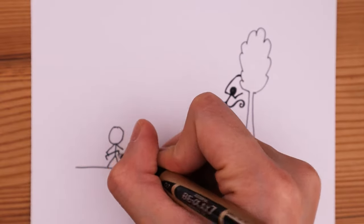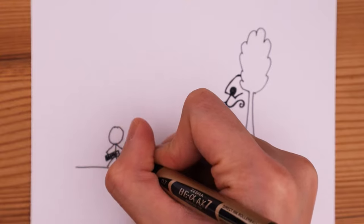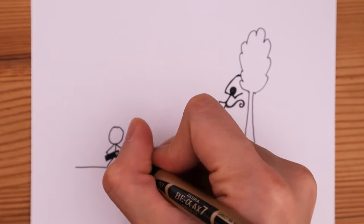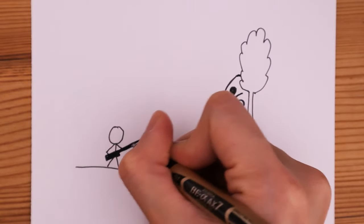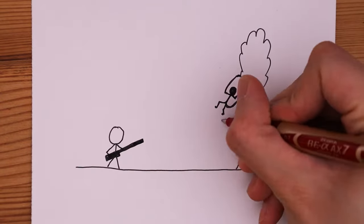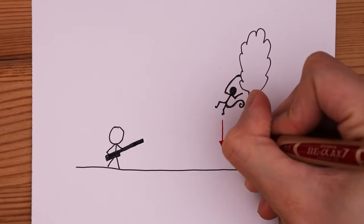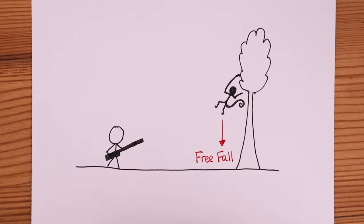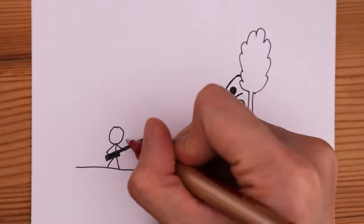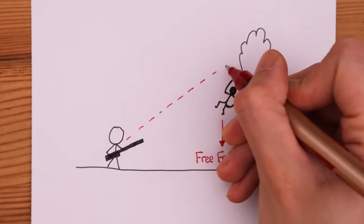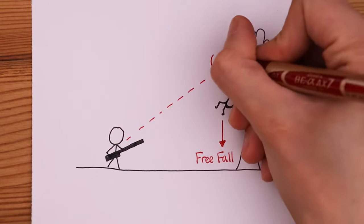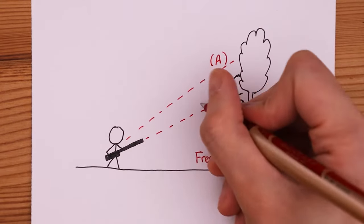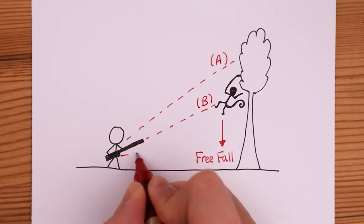The hunter knows that this monkey has super fast reflexes. He knows that after he pulls the trigger, the monkey will immediately react by letting go of the branch that he was holding onto so that it begins to freefall towards the ground. With that in mind, he has to decide whether he should aim above the monkey, aim directly at the monkey, or aim below the monkey.